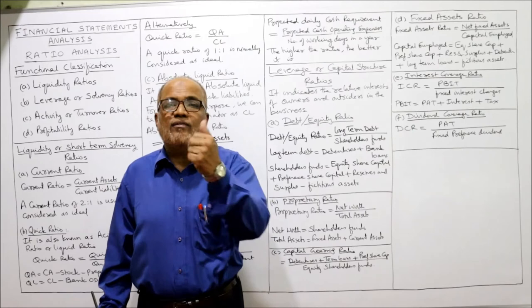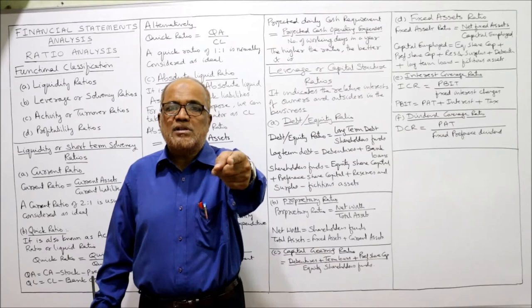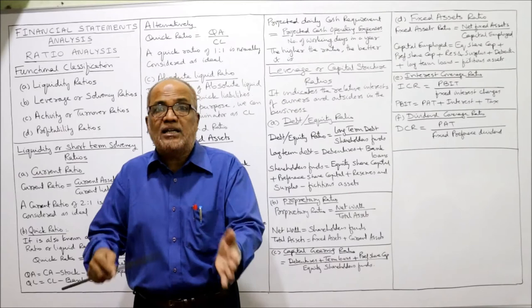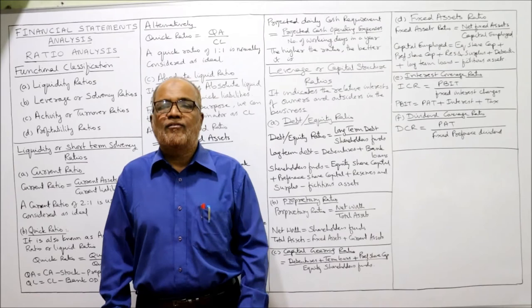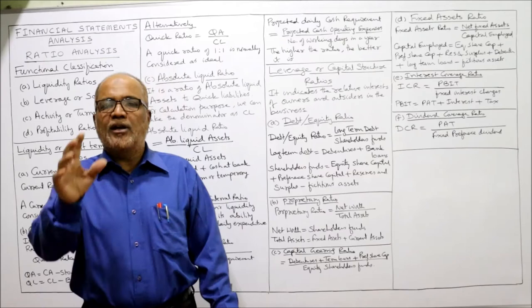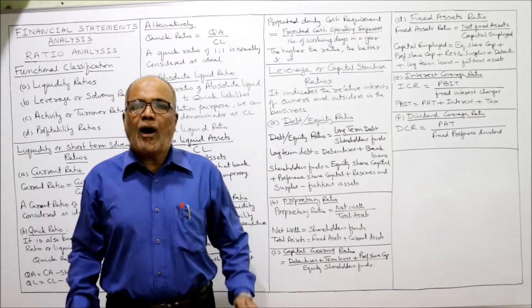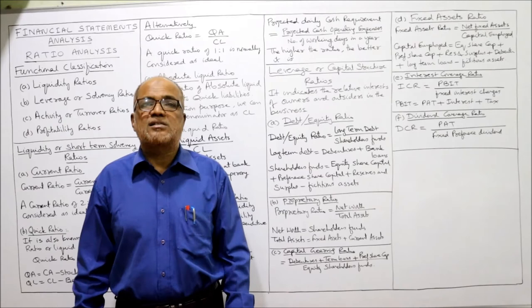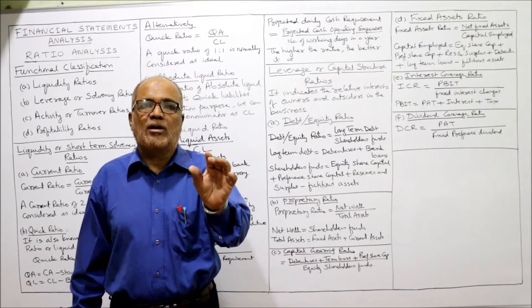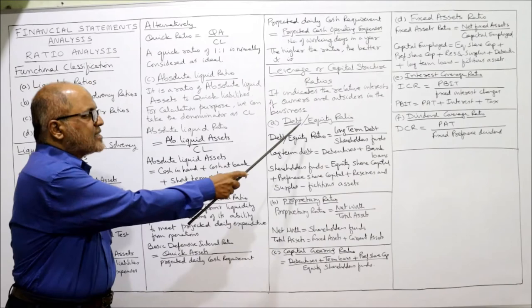The investor looks at how much is owners' fund versus outsiders' fund in the business. If owners' fund is more and outsiders' fund is less, the business is good. If more debt is involved, the risk of the business increases. If debt is more and owners' fund is less, the business is risky and may collapse. To find out the proportion of debt and equity, we apply leverage ratios, also called capital structure ratios or long-term solvency ratios.